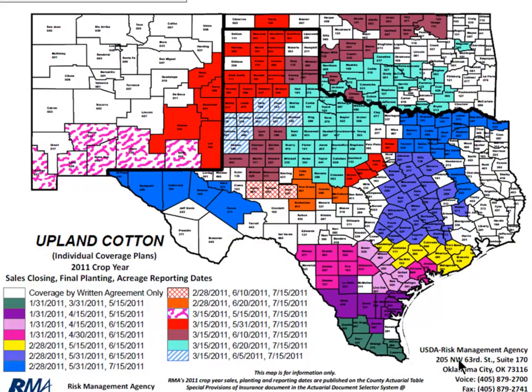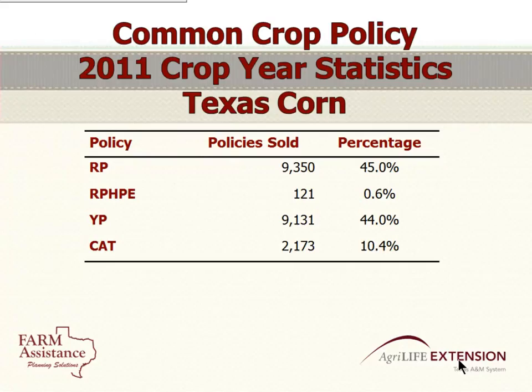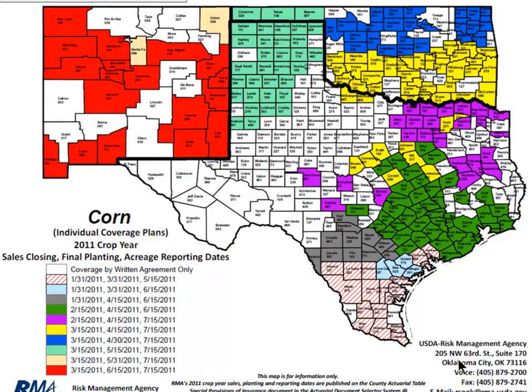This map is available from the Regional Office of Risk Management Agency with USDA in Oklahoma City. You can see our planting dates here in Castro County — May 31st is the final planting date for cotton. For corn, RP accounts for 45% and YP 44%, so it's pretty evenly split between the two, and there's a little bit more CAT on corn at 10%. A lot of people just get CAT or a real low level of YP and then add hail on top of that. The planting date for corn is May 15th.